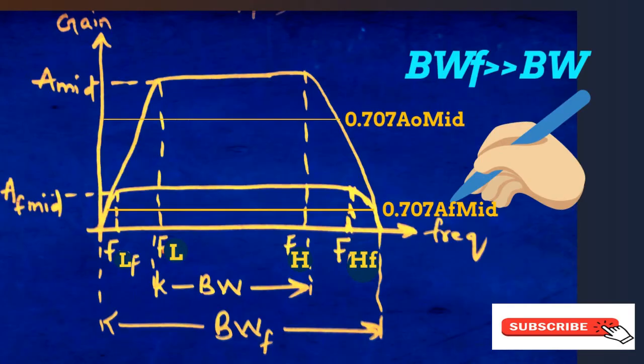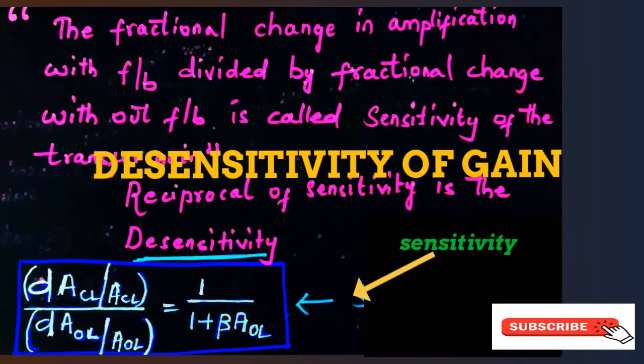This is the graph of bandwidth with feedback — its range is increased. You can see the lower cutoff frequency has shifted to a lower value and the higher cutoff frequency has shifted to a higher value.